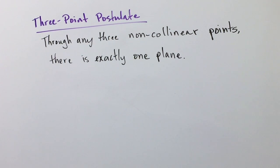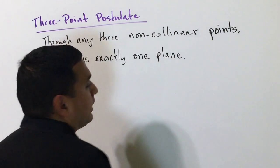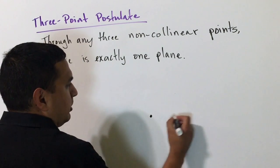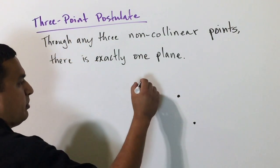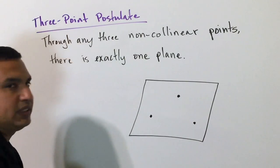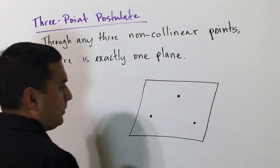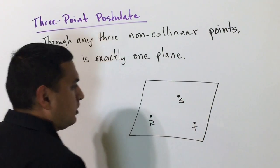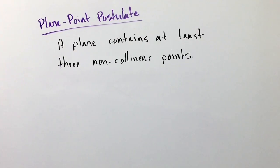Here's another one we've talked about before: the three-point postulate. It says through any three non-collinear points, there's exactly one plane. So if I have three points that are not on the same line, there's only going to be one plane that I can draw containing those three points — we can name these R, S, and T. The plane-point postulate is very similar: if I have a plane, I know I have at least three non-collinear points.